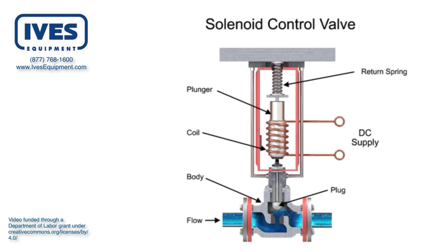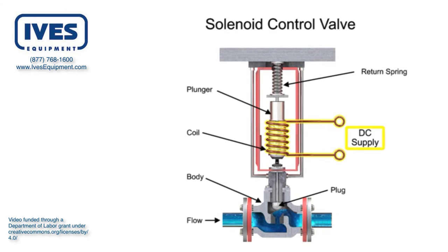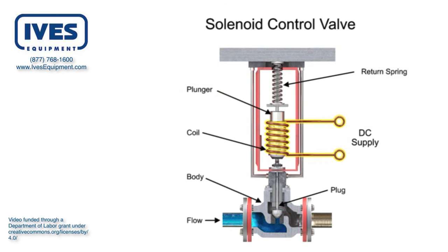For on-off control of the valve, a solenoid is used to actuate the valve to a fully closed or fully open position. Applying current to the coil generates a magnetic field that moves the plunger downward against the return spring. With zero current applied to the coil, the spring pulls the plunger upwards to the fully open position for a normally open state control valve.